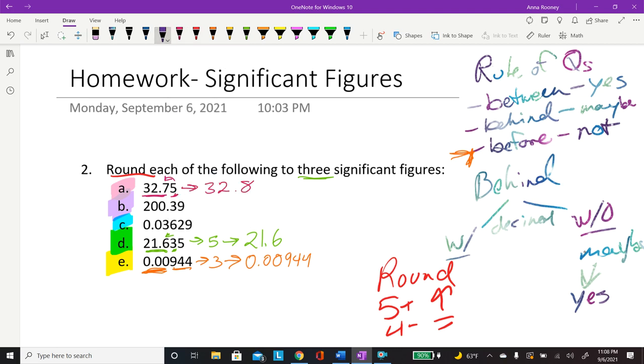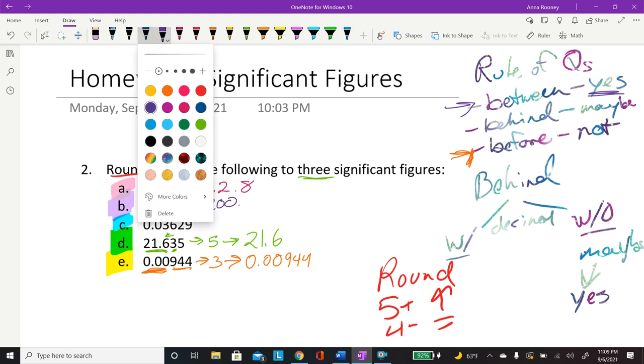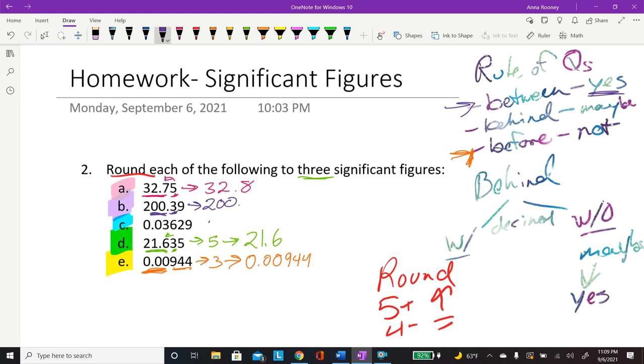And then this next one - does it have any zeros? Yes it does. But are those between? So yes, those are significant figures. So 200. And then is this above five? No, it is below five. So there's nothing there. But normally I would put a decimal point just to show that those are significant. You don't want to put another zero because then that will be another significant figure. But you can put a decimal point to signify that that is in fact there.